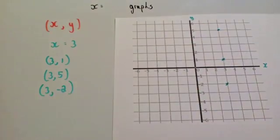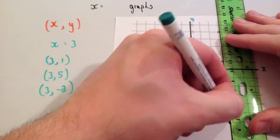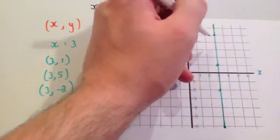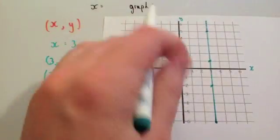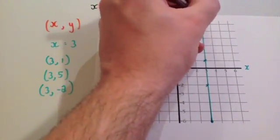So these three coordinates are all in the same vertical line. And if we were to draw a nice straight line through them, you would get that. Now that goes through the x axis at 3, and that's the line x equals 3.